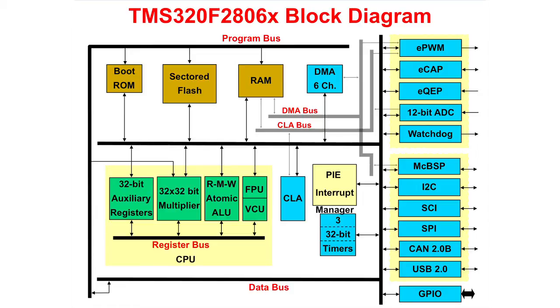The lower set is the communication peripherals and consists of the multi-channel buffered serial port, I2C, SCI, SPI, CAN, and USB.